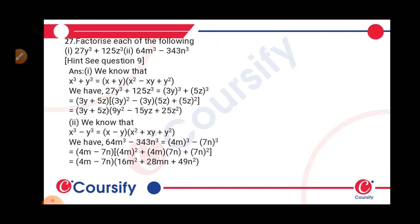So the answer will be 4m minus 7n into 16m square plus 28mn plus 49n square.